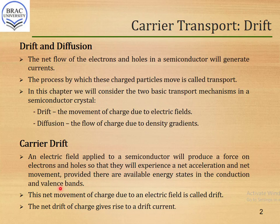Let's start our discussion with the first mechanism, which is carrier drift. If an electric field is applied to a semiconductor, it will produce a force on both the electrons and holes. They will experience a net acceleration and thus a net movement, if there are available energy states in the conduction and valence bands. This net movement of charge due to the applied electric field is called drift, and the net drift of charge gives rise to a drift current.